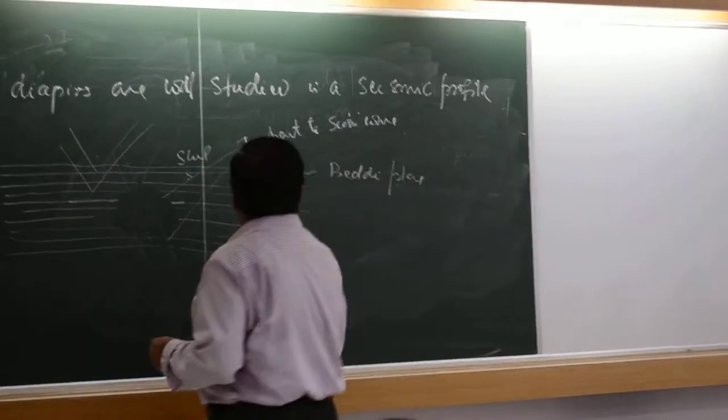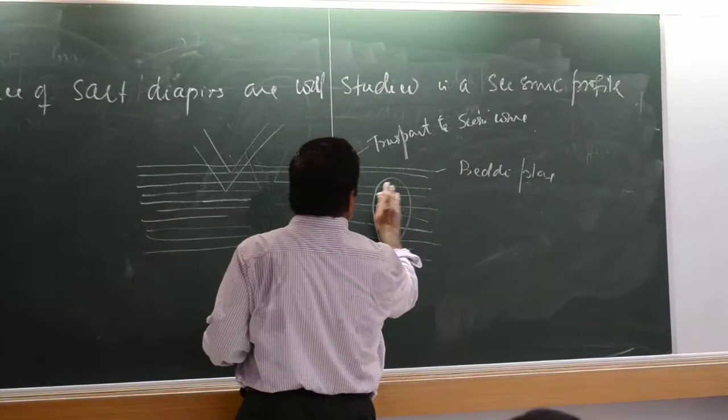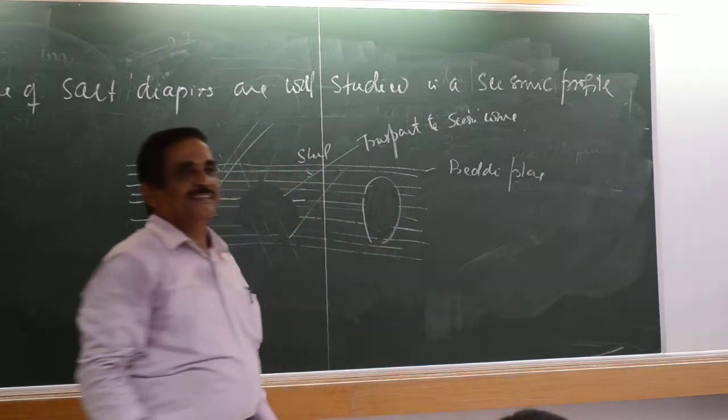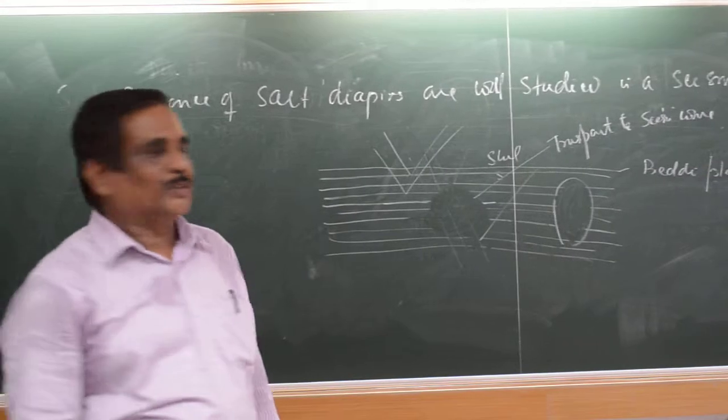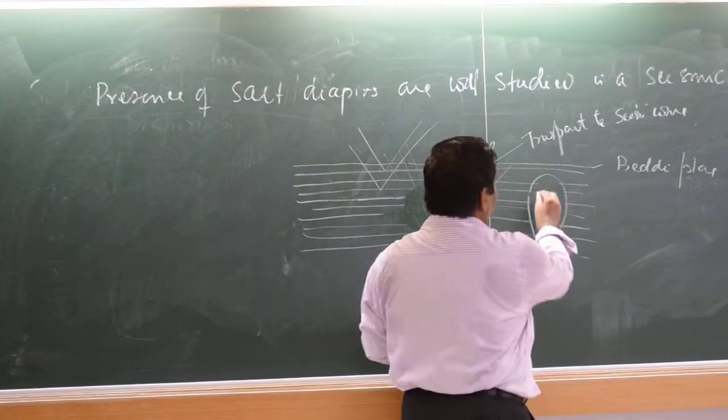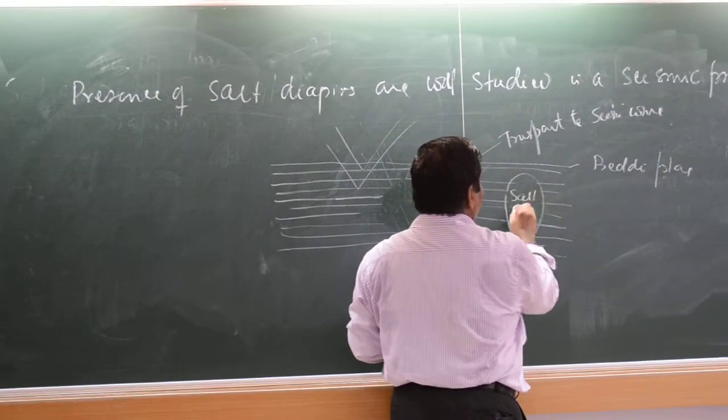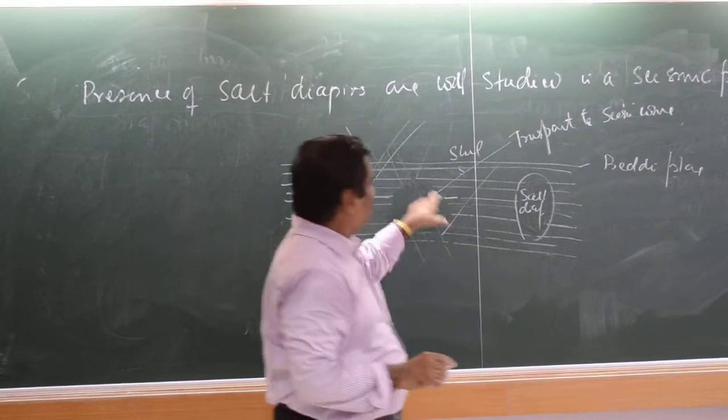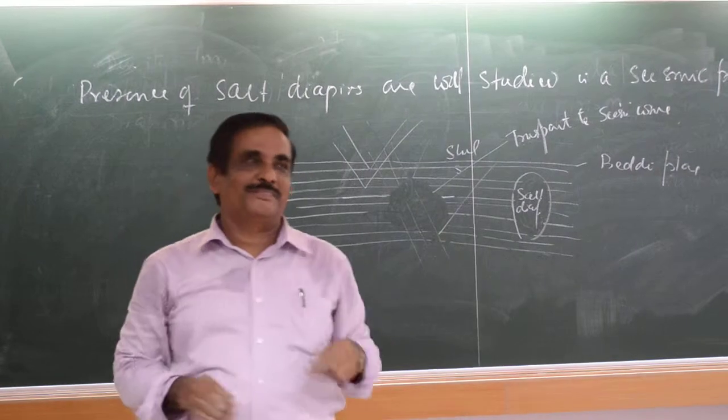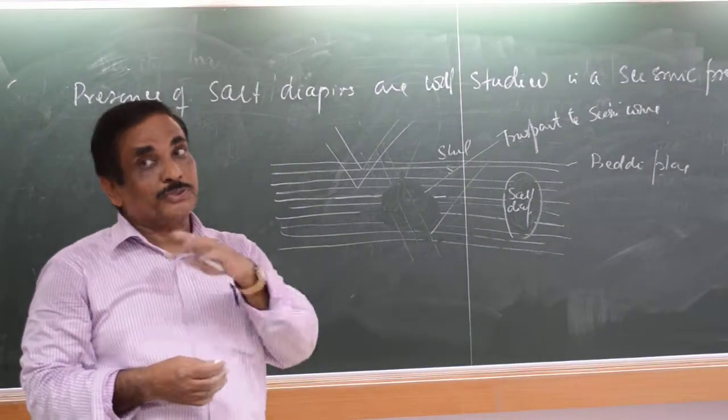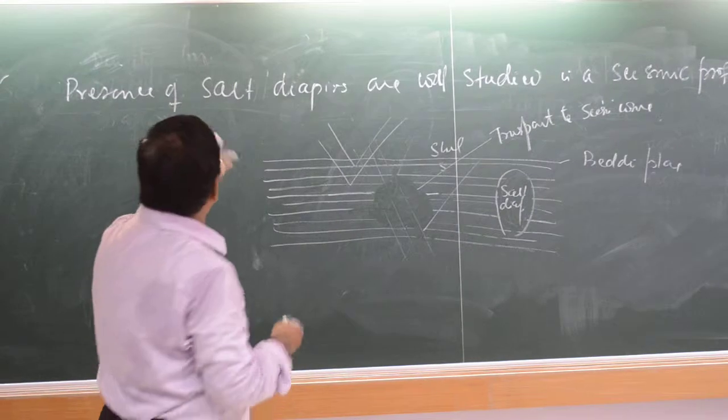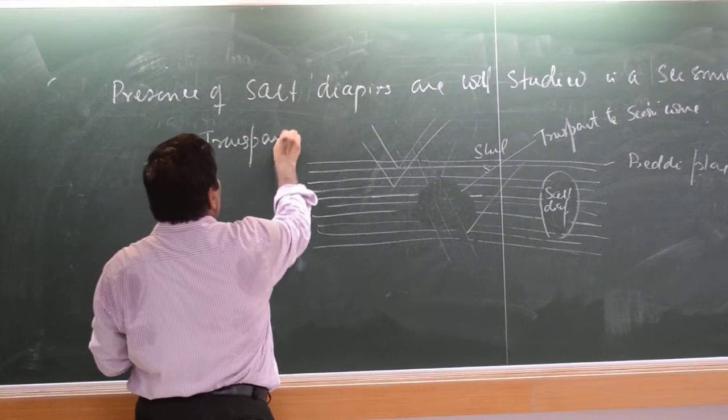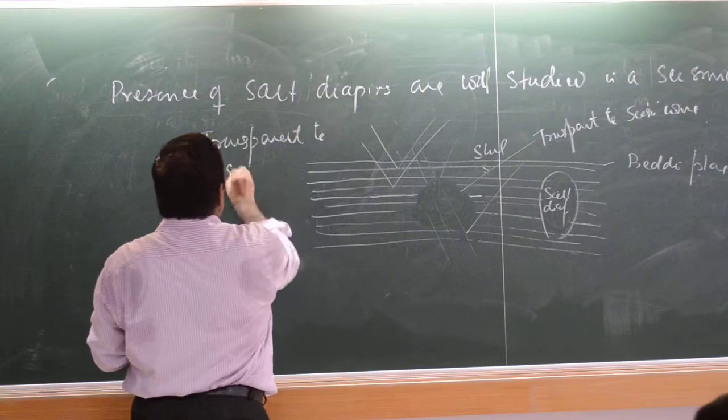You might get a function like this. These are the salt structures. From this, you can define the shape - three dimensional shape or two dimensional shape, all types. So seismic image shows it is transparent to seismic waves.